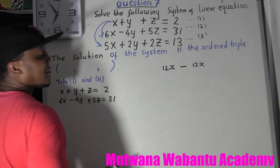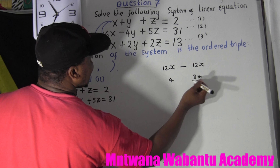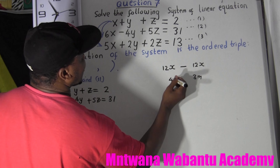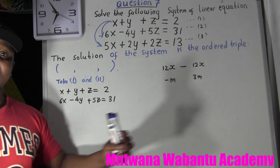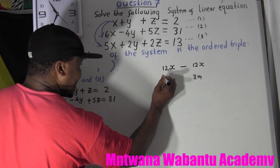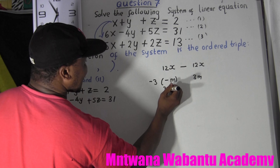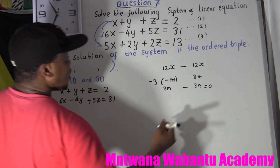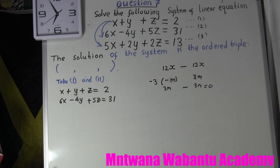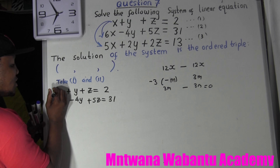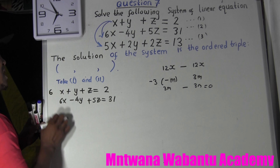The trick is: to eliminate a term, the coefficients must be equal, then subtract. For example, if you have 3m and -3m and you subtract, you get 0. I choose to eliminate x. The x in the first equation is 1 and in the second it's 6, so I'll multiply the first equation by 6.